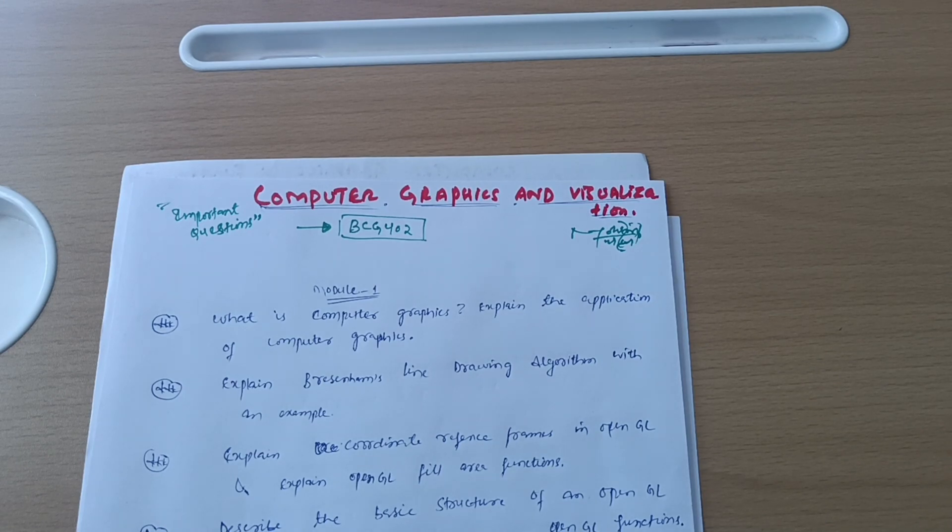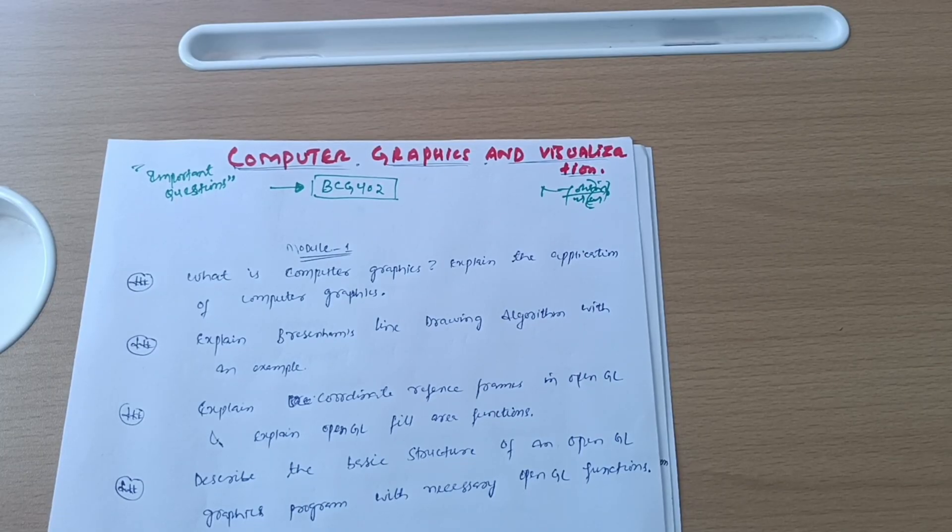This combines two papers: 18CS62 (Computer Graphics and Visualization) and 21CS63 (Computer Graphics and Fundamentals of Image Processing). I have analyzed all previous year question papers and compiled the important questions for you.